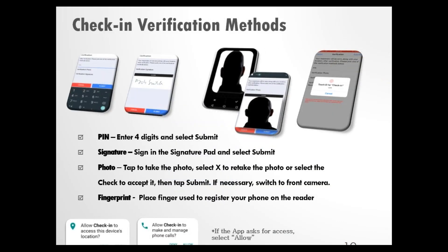There are four verification methods. A PIN number is similar to an ATM PIN — enter your four digits and select Submit. To submit a signature, sign in the signature pad and select Submit. If your agency requires a photo, tap to take the photo, switching to the front camera if needed. If you don't like the photo, tap the X to take a new one. When you're happy with it, tap the check mark and select Submit. For fingerprint, place the finger you use to register your phone on the fingerprint reader and follow the prompts.